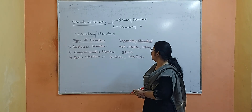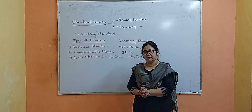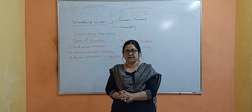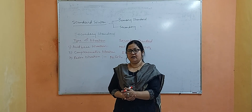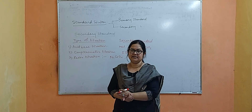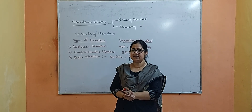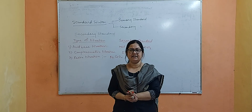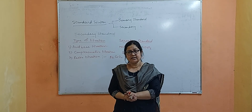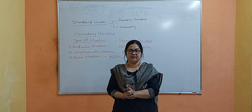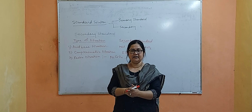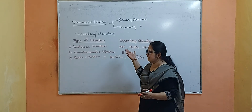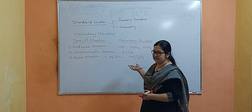For example, if we are using HCl as a secondary standard, we first need to standardize it using succinic acid. Succinic acid is treated with the NaOH solution, and NaOH in turn is titrated with HCl to get the correct normality or correct concentration. This is how we use primary and secondary standard solutions.